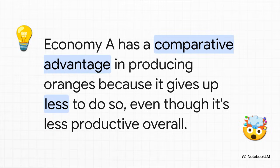And boom, there it is. This is the big reveal. Even though economy B is the powerhouse, the one with the absolute advantage in everything, it's actually economy A that has the comparative advantage in making oranges. Why? Because their sacrifice, their opportunity cost is way, way lower.